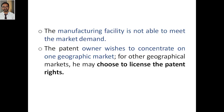The fourth reason: the patent owner wishes to concentrate on a specific geographic market. For other geographic markets, he may choose to license the patent rights. For example, in India I will manufacture, but in the US and Europe I want to license it. Nobody can use my patent in India because I have not given any license there. When I give a license to America, Russia, or Japan, only the company I have given the license to can produce, use, or sell it.